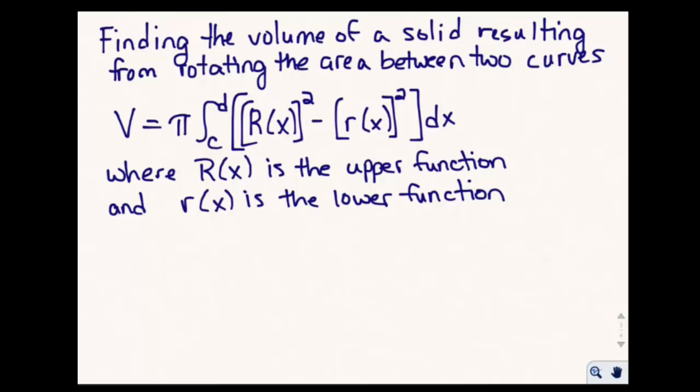If we want to find the volume of a solid resulting from rotating the area between two curves, we do things very similarly to when we're just finding the rotation solid between one curve and the x-axis. We take pi times the integral from c to d — those are the x values where the two curves cross — and we square the function on top, then subtract the square of the function on the bottom, and integrate.